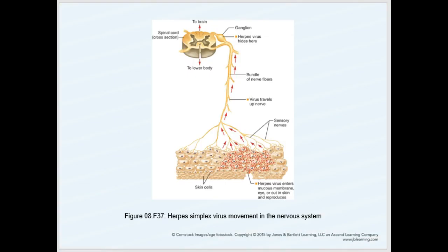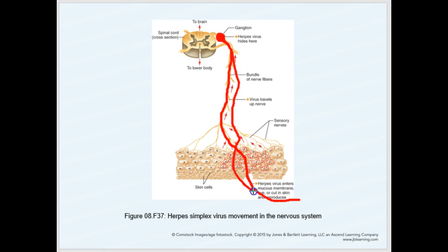Here's a picture of that viral movement. The virus will enter through a mucous membrane or the skin, and it will travel up these nerves all the way back towards the spinal cord. It'll hide in this little bulge here, which is the dorsal root ganglion. It'll lay dormant in those nerves until the next outbreak, where it will travel down again and manifest through the same area of the skin and mucous membranes.